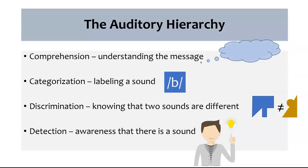Above that is comprehension — this is where you hear something and actually know what information is being conveyed. So with this auditory hierarchy, this provides us with useful terms that we can use when describing how research is done, or the different things that one can do with your ears and your brain as you're hearing different sounds.